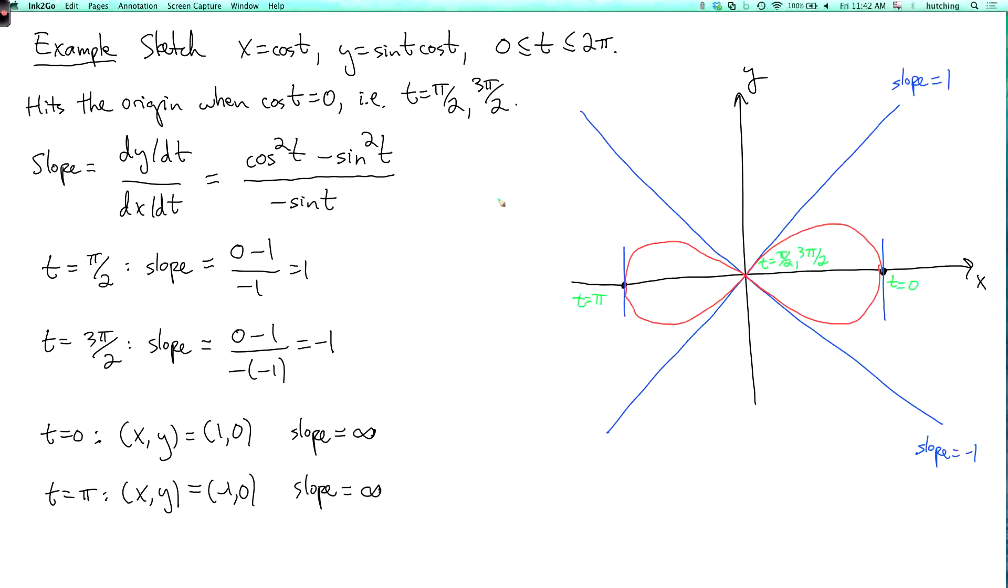Now, which way is the arrow going to go? Well, it should go from t equals 0 to t equals pi over 2 first. And if t equals pi over 2, remember the slope is 1. So the arrow should go like this. And then it continues to t equals pi. And then it continues to t equals 3 pi over 2, where the slope is minus 1. And then it goes back to t equals 0.